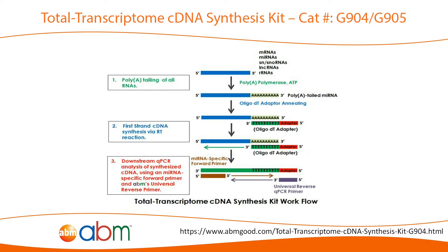This kit is helpful if customers are having difficulties reverse transcribing all types of RNA. The streamlined procedure first adds a polyA tail to the RNA template using polyA polymerase. Then cDNA is synthesized using an oligo-dT adapter. With the provided universal reverse primer, customers are free to use their gene-specific primers for downstream applications.